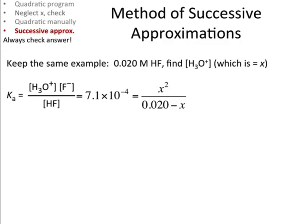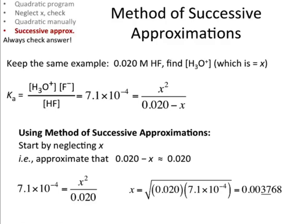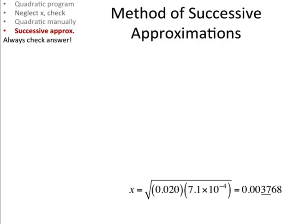What else can we do? Let's try this. This is new. The method of successive approximations. We're still using the same sample, the same setup, the same equation. How do we do this? The first thing you do is you neglect x, just like we did before. Assume that .020 minus x is equal to .020. And then you solve that through and you get x, the same value we had a few slides ago.